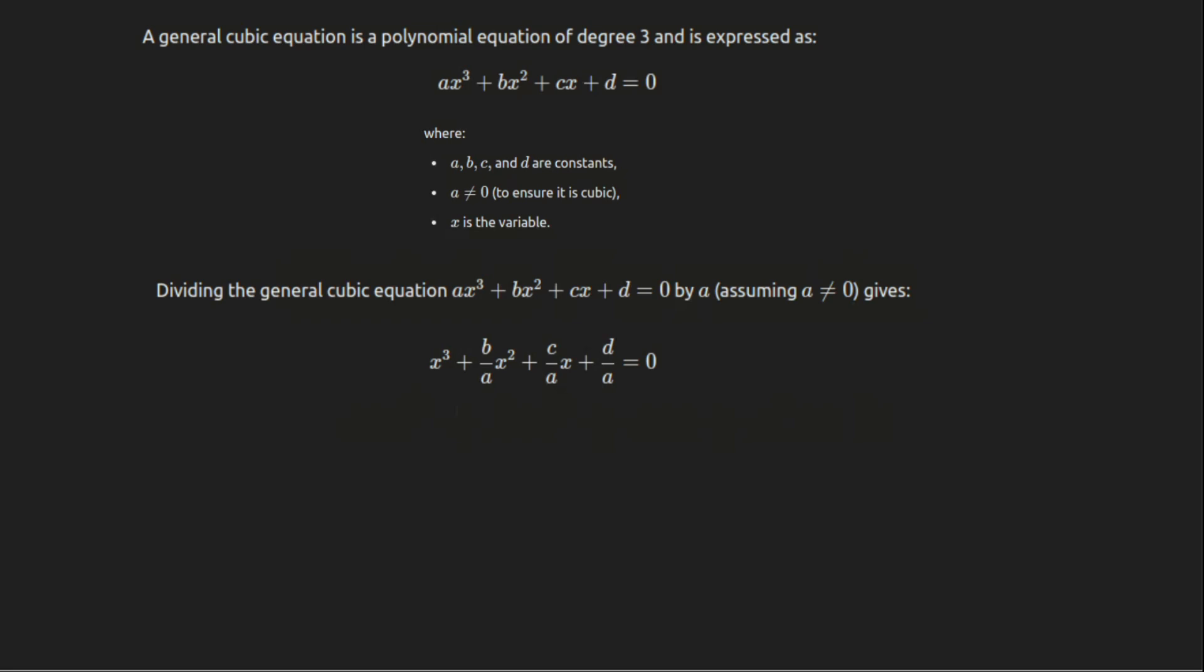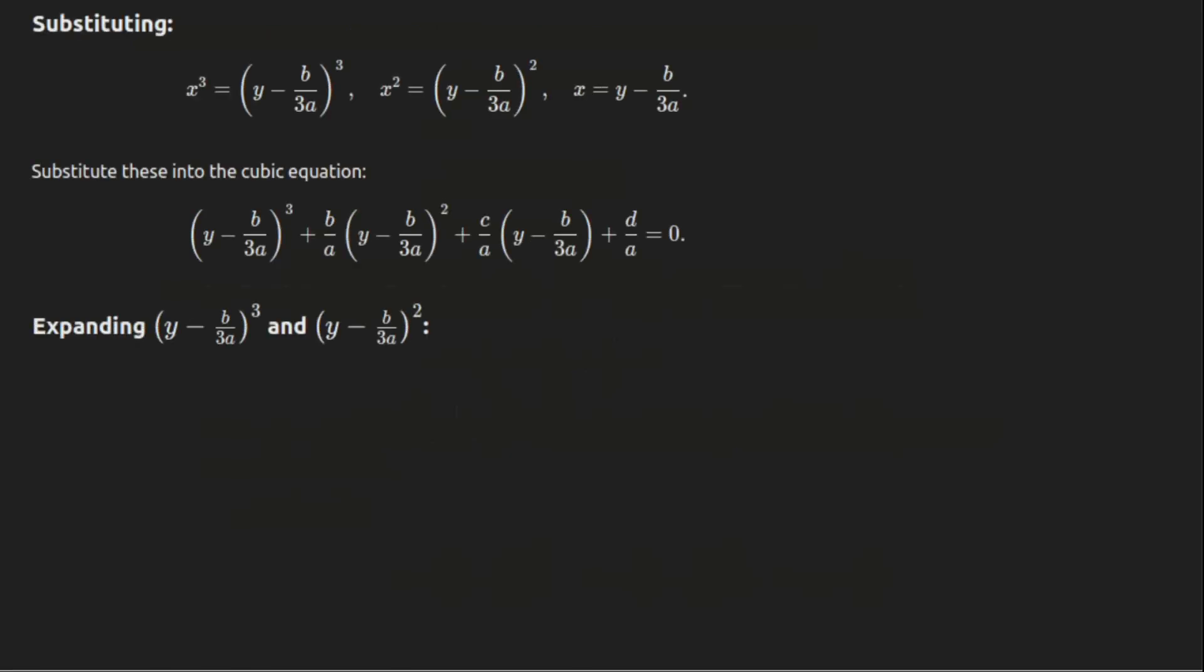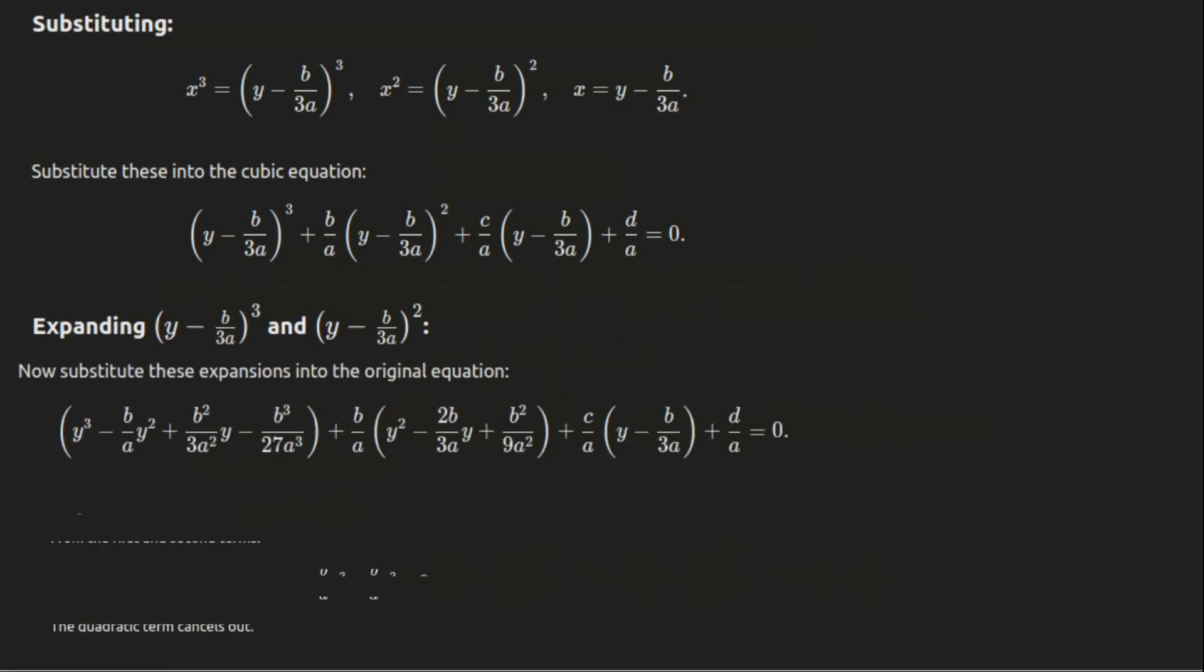Next, to eliminate the x² term, we substitute x = y - b/(3a). This transforms the equation into a simpler form called a depressed cubic. The new equation becomes y³ + py + q = 0, where p and q are constants derived from the original coefficients.